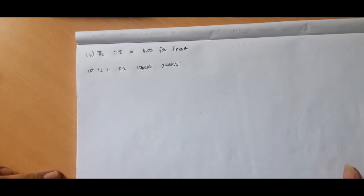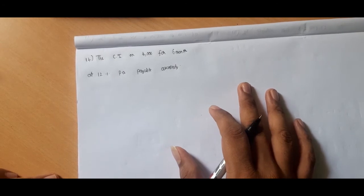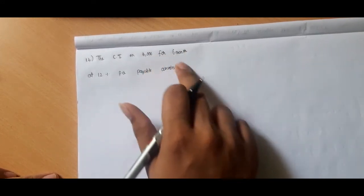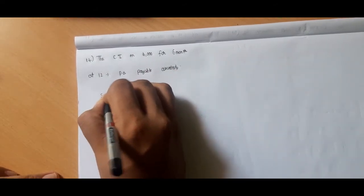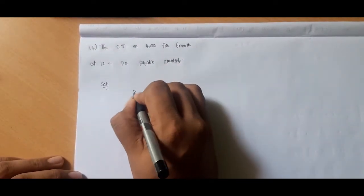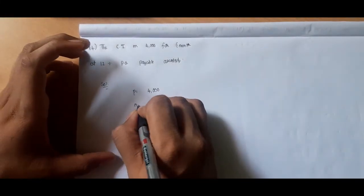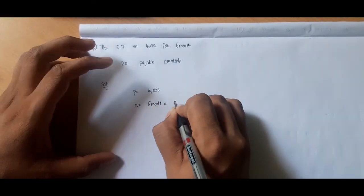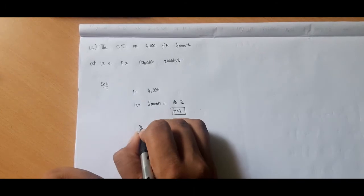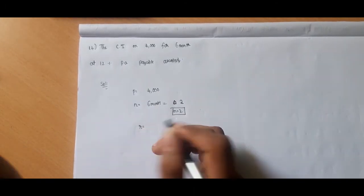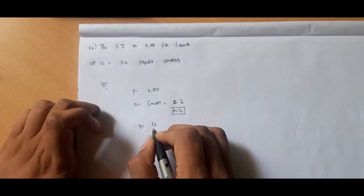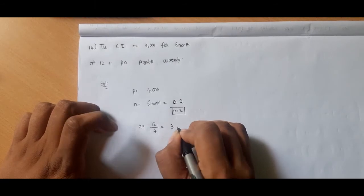So sum number 14 is a compound interest problem. This is half-yearly, so 1 year quarterly is 4, but 6-month quarterly is 2. Principal is 4,000, period is 6 months, n equals 2. Rate of interest is 12 percent per annum. Quarterly divided by 4 is 12 divided by 4 equals 3 percent per quarter.